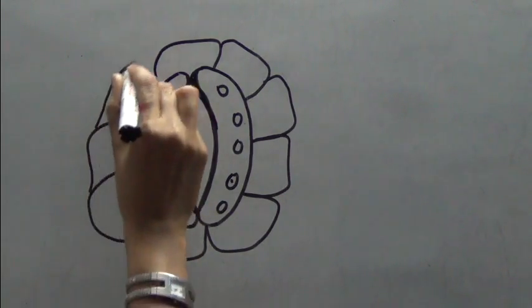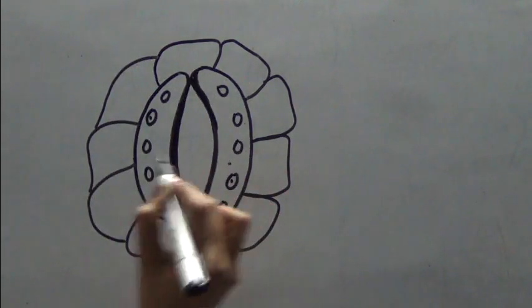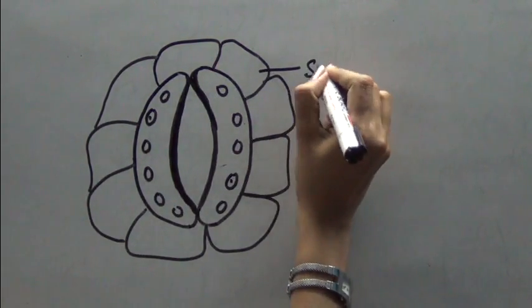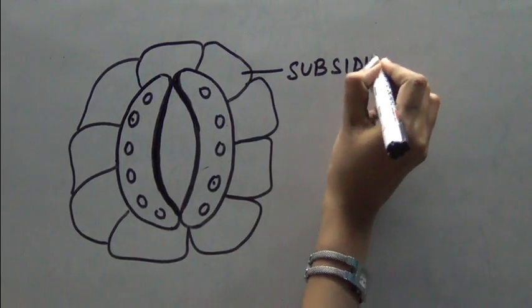And together the subsidiary cells, guard cells and the stomata forms the stomatal apparatus. So we will label. This is subsidiary cells.